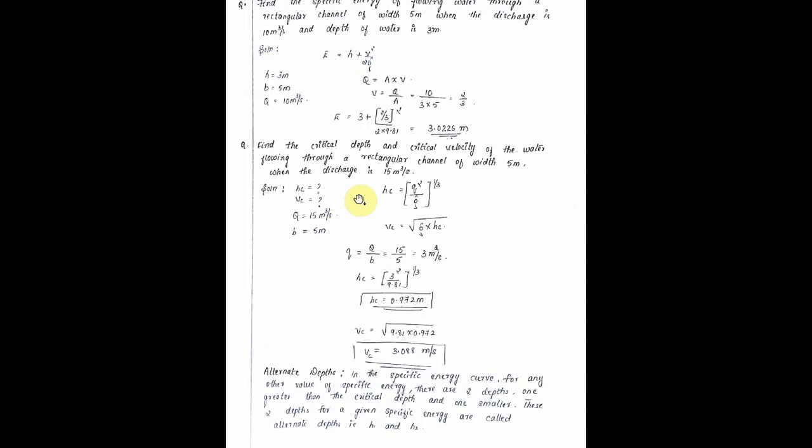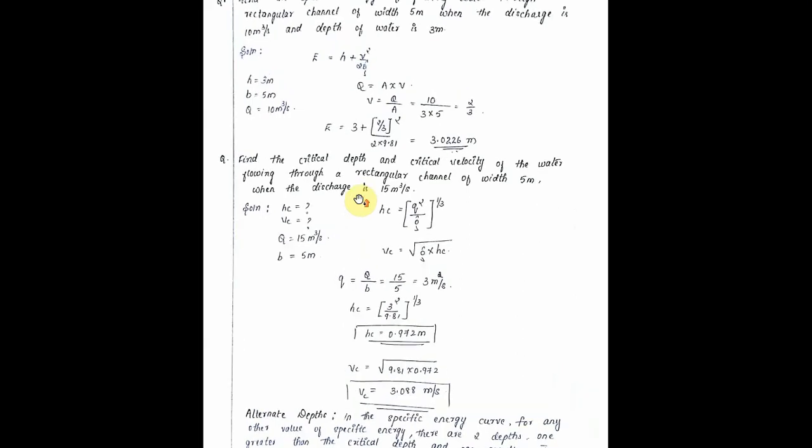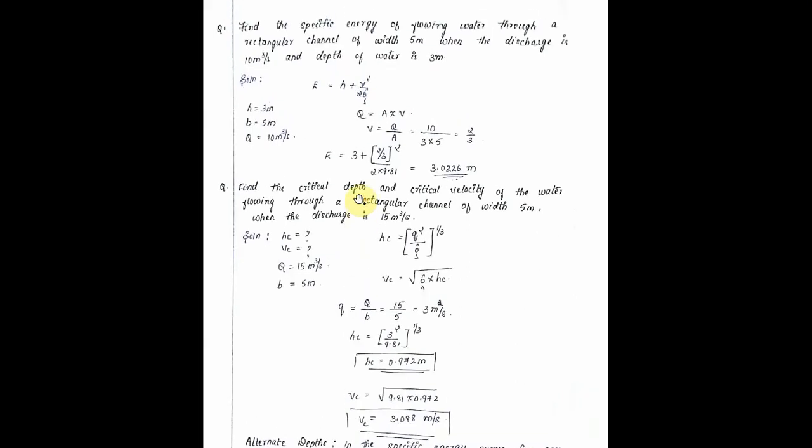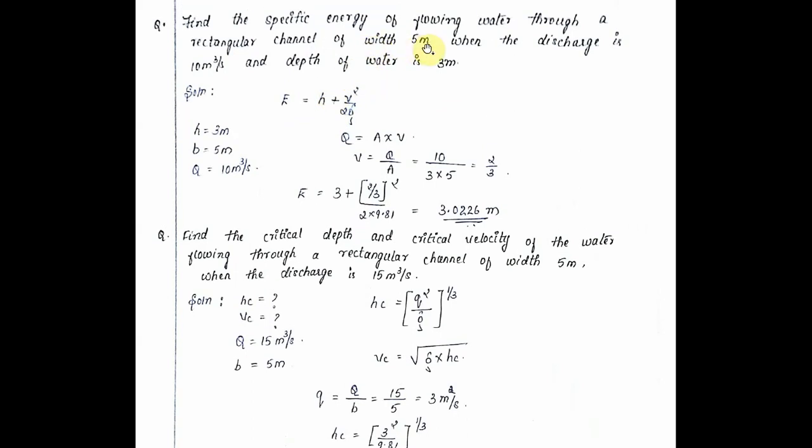Hi everyone, this is my Shiro. Today I am going to tell you the problems related to module 2, that is uniform flow in open channel. First one: find the specific energy of the flowing water through a rectangular channel of width 5 meters when the discharge is 10 cubic meters per second and depth of water is 3 meters.